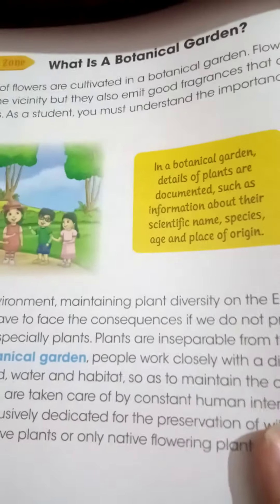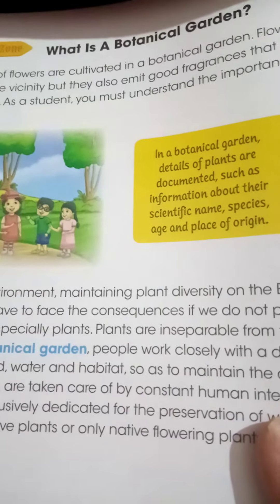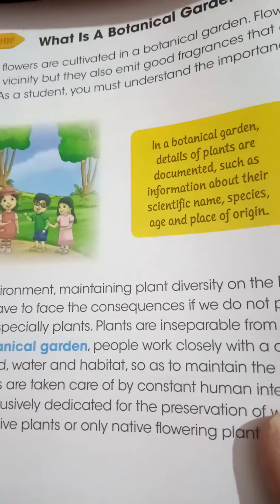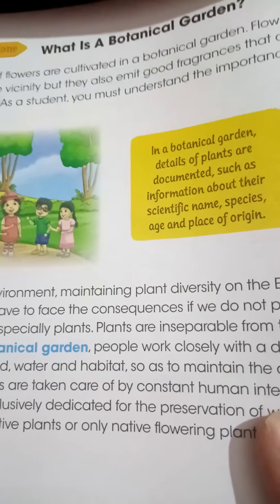I'll explain you about the botanical garden. A botanical garden is a type of garden that is dedicated to the collection, cultivation and display of a wide range of plants labeled with their botanical names. This garden preserves all the plants and name tags are put on them so that we are able to recognize which plant and from which place it belongs to.